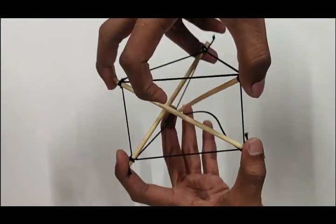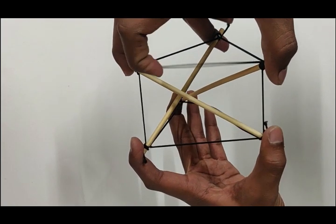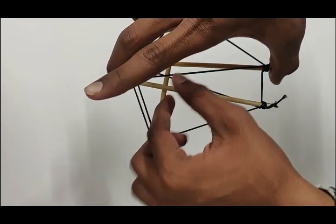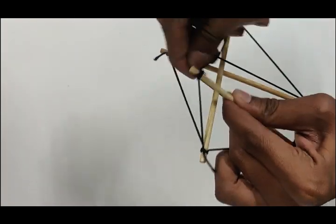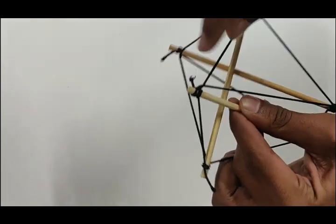Now, as you can see, the strings are not tight enough to sustain the load. Hence, to increase the tension in the string, increase the number of loops. That is, reduce the effective length of the string.